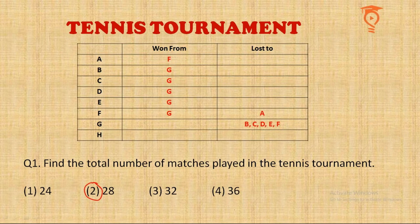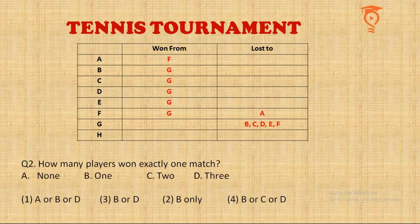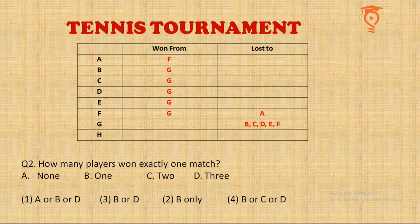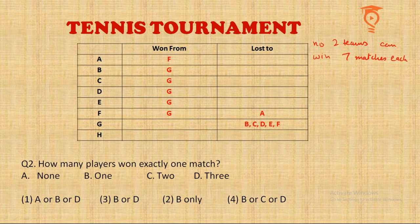Moving ahead to the second question: how many players won exactly one match? There are eight players, each playing seven matches — against every other player. A player can win at most seven matches or lose at most seven. However, no two teams can both win all seven matches, and no two teams can both lose all seven matches. If one team wins all seven, then when the second team plays, they have already lost one match to that team, so they cannot also win all seven. The same logic applies for losses.